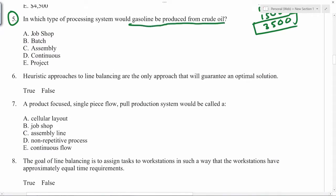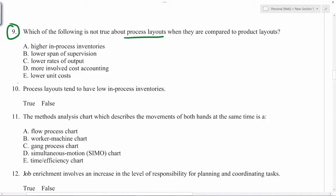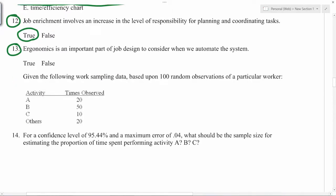The gasoline produced from crude oil is continuous. Heuristic approaches to line balancing are the only approach that will guarantee optimal solutions - that's not true. A product-focused single-piece flow production system would be called cellular layout. The goal of line balancing is to assign tasks to workstations in a way that we get approximately equal time - that is true. Which of the following is not true about process layouts? It has to be lower unit cost. Process layouts tend to have low in-process inventory - that's not true. Method analysis chart which describes the movements of both hands is simultaneous motion chart. Ergonomics is an important part of job design to consider when we automate the system - that's not true. Ergonomics is important when you have people working on the machines or doing some job.